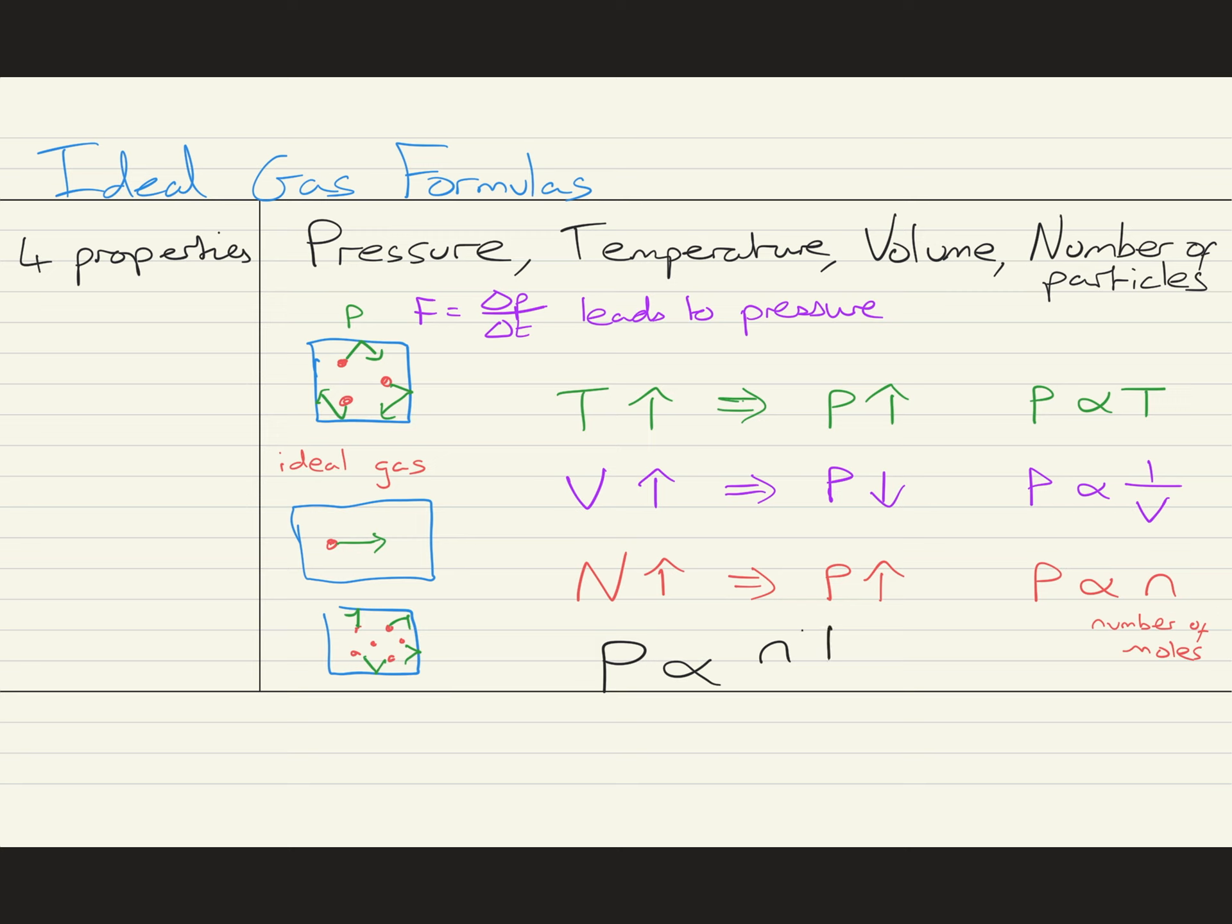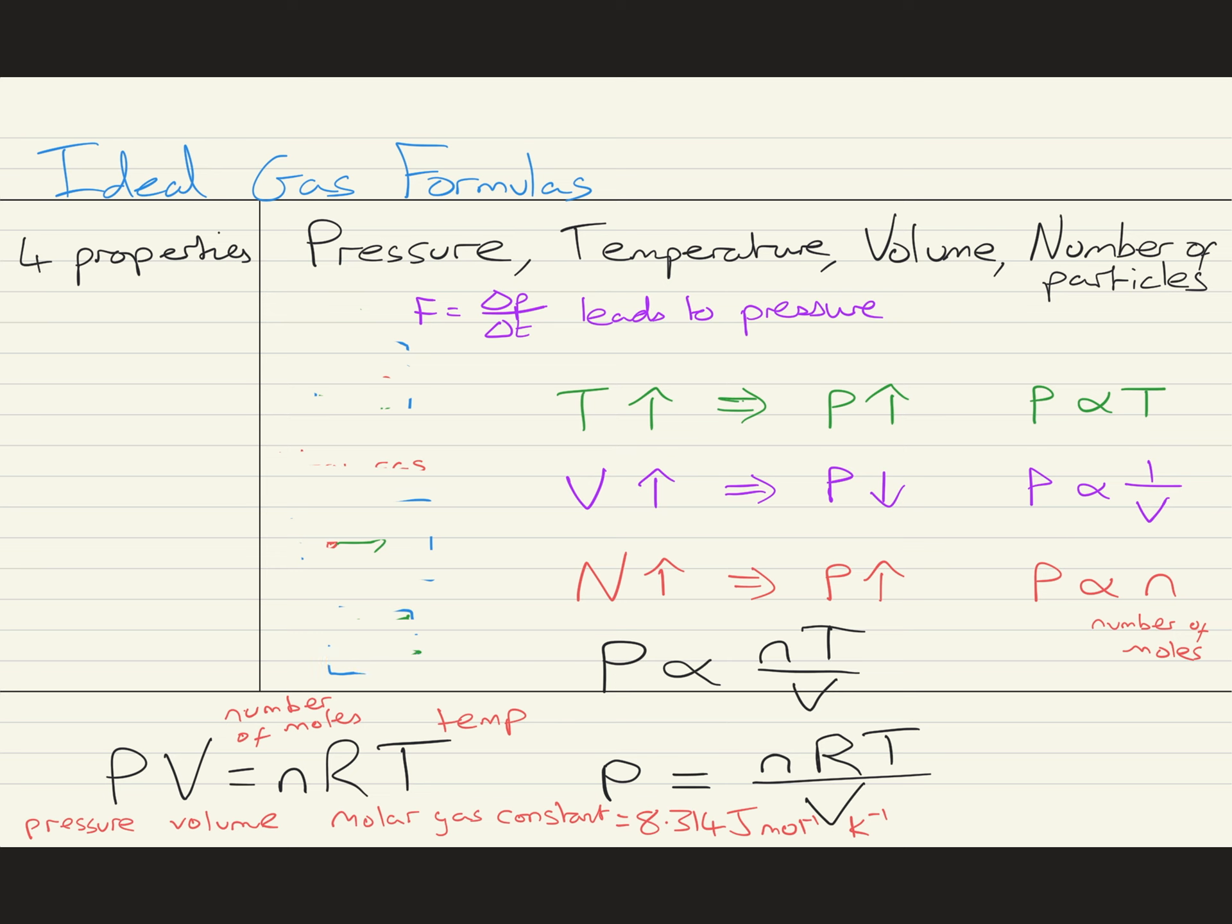Combining all of this, we can say that P is proportional to NT over V. Let's put in a constant of proportionality, R. So, P equals R NT over V or PV equals NRT. Pressure times volume is equal to the number of moles multiplied by the molar gas constant R multiplied by the temperature in Kelvin. The molar gas constant has a value of 8.314 joules per mole per Kelvin and is simply the constant of proportionality for this relationship.